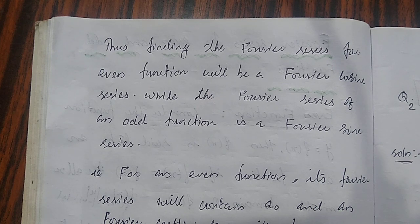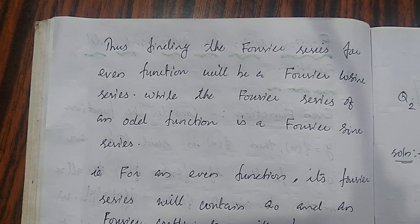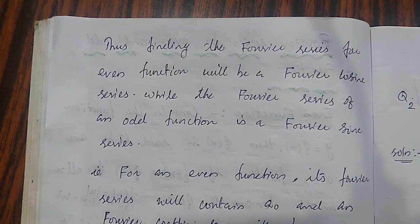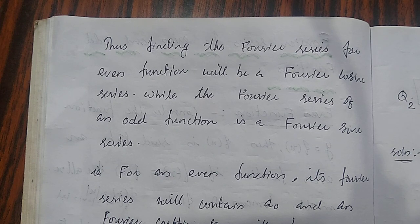Thus, we have seen in the previous video that the integral from minus L to L of f(x) dx — the value of that integral depends on whether the function is even or odd. If it is even, we get 2 times the integral from 0 to L of f(x) dx, and if it is odd, we get 0. So, in order to find the Fourier series for a given function f(x), first checking whether it is even or odd is a better option for finding the coefficients.